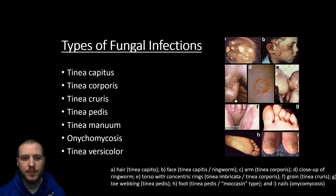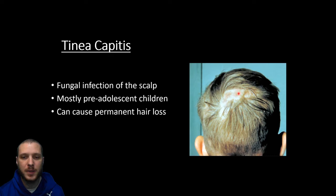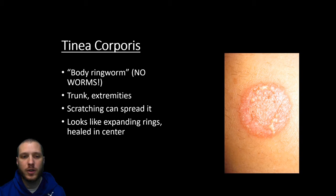Here are the most common types of tinea infections. Tinea capitis — capitis means head — is a fungal infection of the scalp mostly seen in pre-adolescent children, and it can cause permanent hair loss. Tinea corporis is more commonly known as ringworm, though there are no actual worms. It's mostly seen on the trunk and extremities. Scratching can spread it, causing expanding rings with a possibly healed center.